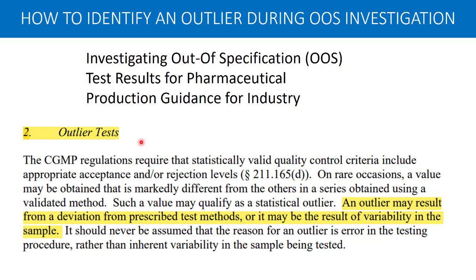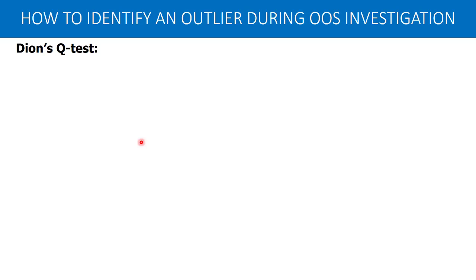Regulators recognize that the analyst may come across outlier test results and that has to be investigated properly based on statistical evaluation. The details of how one can reach a conclusion whether a given measurement is really an outlier or not is not well explained in the guideline. That is the purpose of making this video — so that you can get an understanding of how to identify an outlier during an out-of-specification investigation.